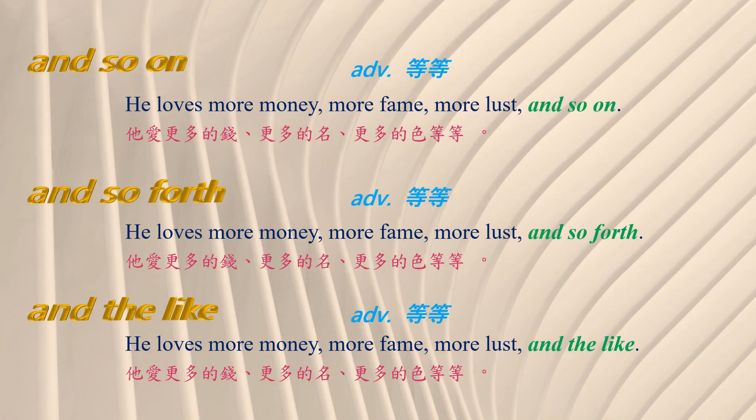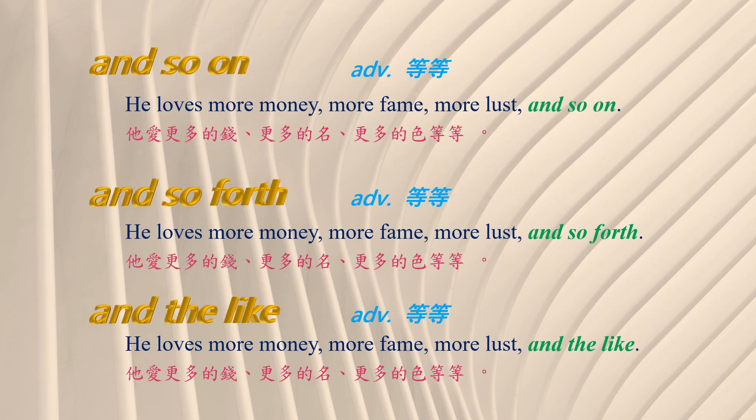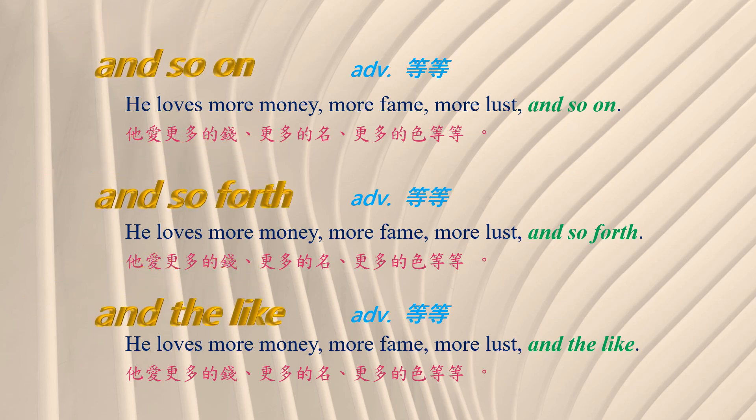Team Two: 'and so on,' 'and so forth,' and 'the like.' All three phrases are adverb phrases, and they all mean 等等 in Chinese. 三个片语都是副词片语，都表示等等的意思。